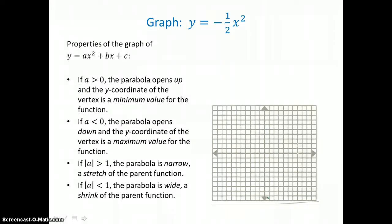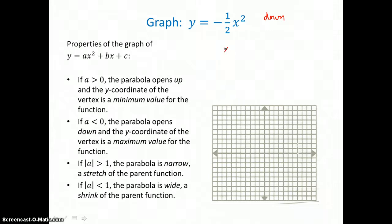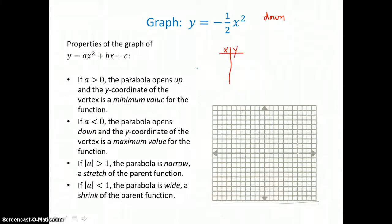In our second example, we're going to graph y equals negative 1 half x squared. I know that this parabola is opening down because my a value is negative — my a value is negative 1 half. And I'm going to make a table of values, and again I'm going to find the vertex.